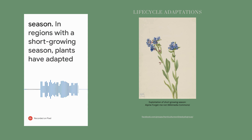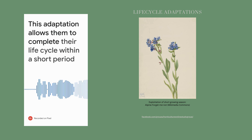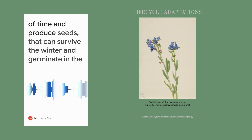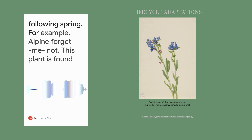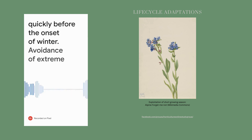Exploitation of short growing season. In regions with a short growing season, plants have adapted to grow and reproduce quickly before the onset of winter. This adaptation allows them to complete their life cycle within a short period of time and produce seeds that can survive the winter and germinate in the following spring. For example, the Alpine forget-me-not — this plant is found in the alpine regions of Europe and has adapted to grow and reproduce quickly before the onset of winter.